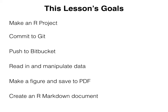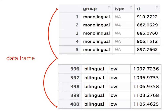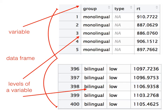Before we get started, I want to go over some very basic things. The data we'll be working with today looks something like this — what you see are two snapshots of the data, the first and final five rows. We call this whole data set a data frame. Within a data frame, the columns are generally referred to as variables. For example, group is a variable that describes data points, and it can be broken down into levels — in this case, monolingual and bilingual. This is the main variable we're working with today.